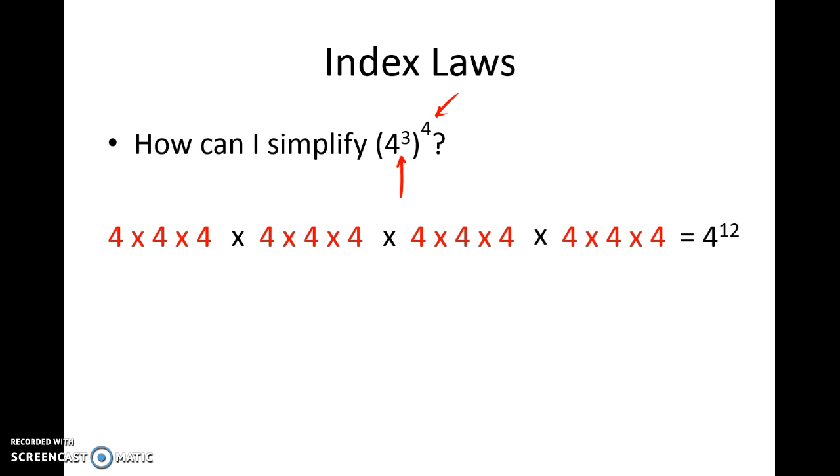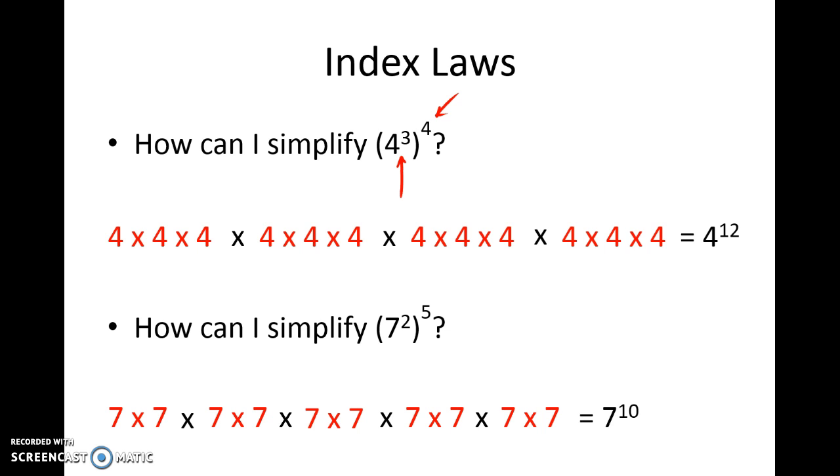You might start to see a shortcut presenting itself here. Let's see if it works. How could I simplify 7 squared all to the power of 5? Well, 7 squared can be written like that, and if it's raised to the power of 5, it simply means we have 5 sets of these values. Putting all of those in, we can see we have 10 sevens multiplying each other. The shorthand method is 7 to the power of 10.